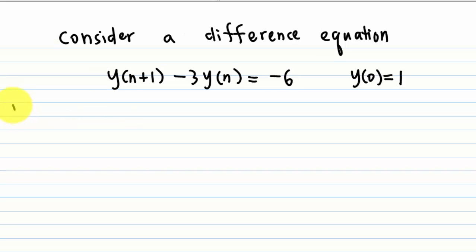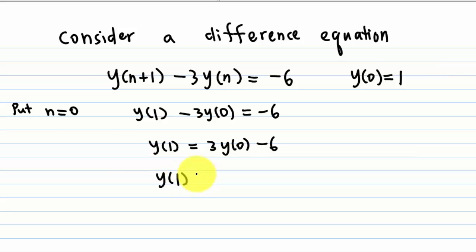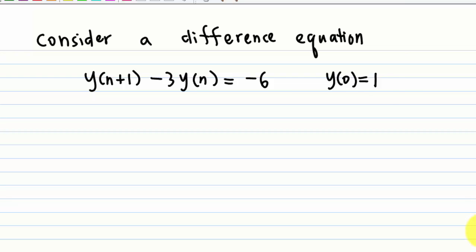First, we put n=0 to calculate y(1), because 0+1 is 1. So we get y(1) - 3y(0) = -6. Therefore, y(1) = 3y(0) - 6, where y(0) is 1 minus 6. Calculate: you get y(1) = 3 - 6, which is -3. Therefore, we know y(1) = -3.